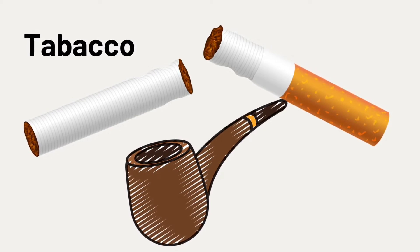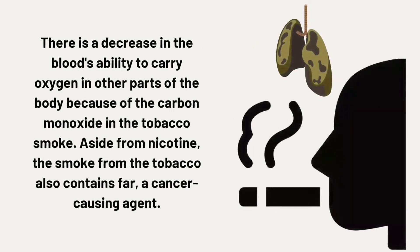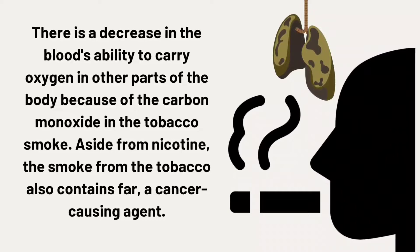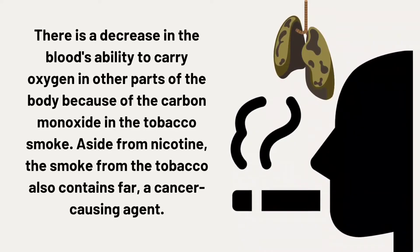Tobacco: next to caffeine, another stimulant is nicotine, which is contained in every tobacco product. Smoking constricts blood vessels, which decreases skin temperature. Since it acts as a stimulant on the heart and nervous system, an adult experiences an increase in heartbeat and blood pressure. There are also changes in the brain that may lead to addiction. There is a decrease in the blood's ability to carry oxygen to other parts of the body because of the carbon monoxide in tobacco smoke.